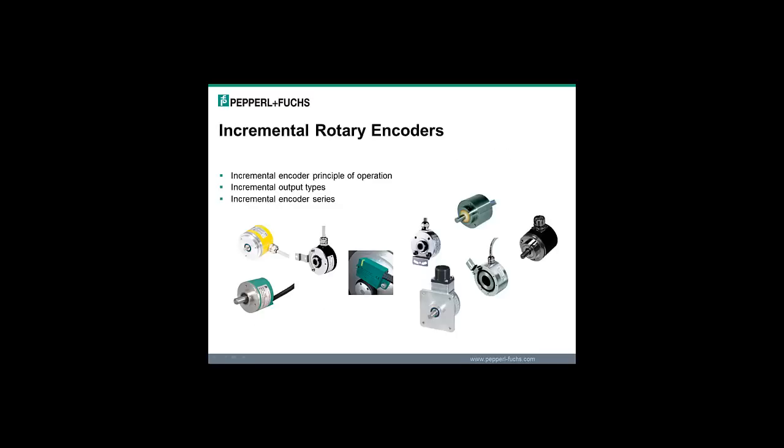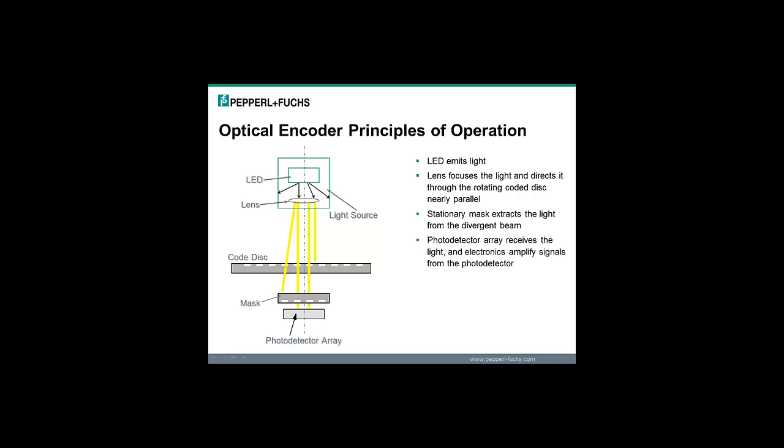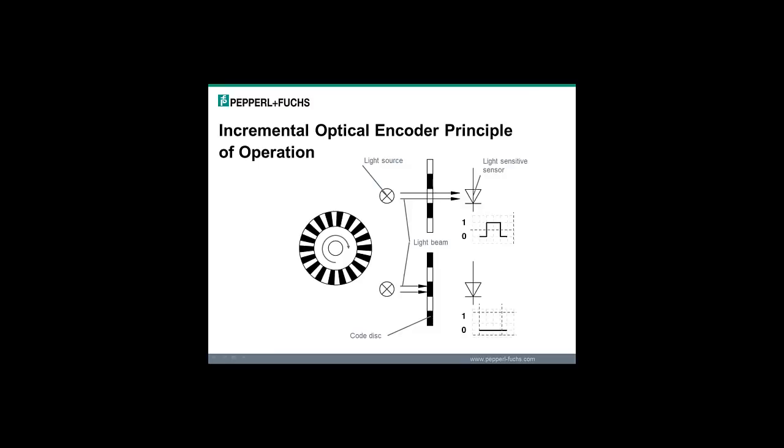The next section is for the principle of operation, output types, and different series available for incremental rotary encoders. The optical rotary encoder has an LED with a photo receiver array that will receive the light and then be amplified and conditioned. There is a code disk that will determine the resolution and it has slots or clear spots that allow light to go through and opaque or covered spots that will prevent light from going through. This slide shows the type of signal generated when the light goes through the code disk or if the light is blocked. So if you have 360 clear and blocked segments on the code disk you will get 360 pulses per turn. The number of pulses per turn will help determine the resolution.